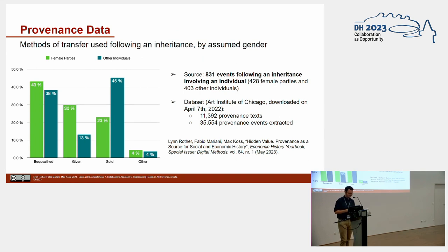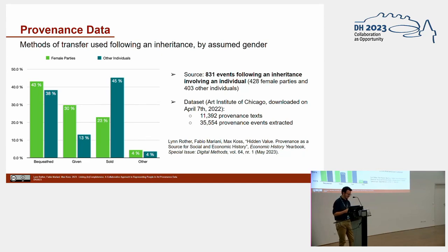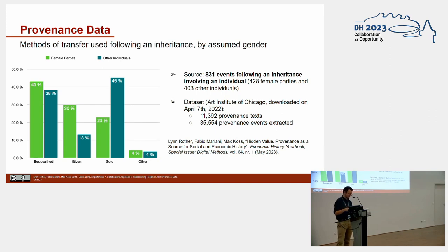We experimented with our methodology for the first time with the provenance of more than 11,000 objects published by the Art Institute of Chicago. Once we had structured the data automatically with the help of artificial intelligence, we were able to conduct a preliminary analysis on the agency of individuals. For example, we can see how individuals act differently after inheriting objects: women are more likely to keep the inherited object and then bequeath it or donate it to a museum, while other individuals are more likely to bring it back to the market by selling it.